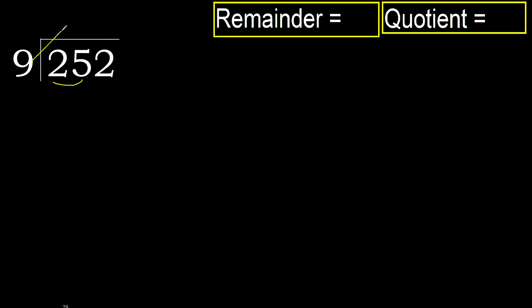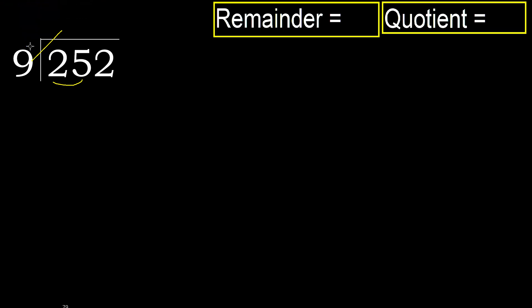Therefore, with 25: 9 multiplied by which number is nearest to 25 but not greater? 9 multiplied by 3 is 27 — 27 is greater. 9 multiplied by 2 is 18, which is not greater.